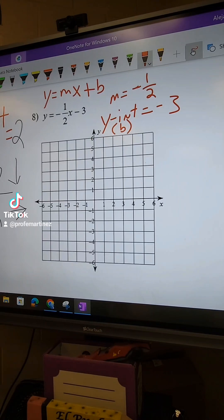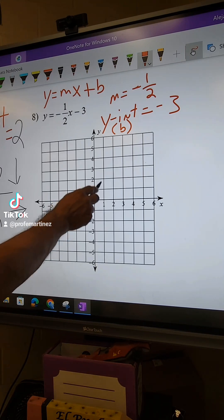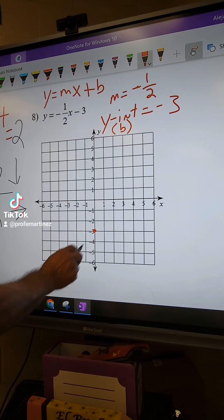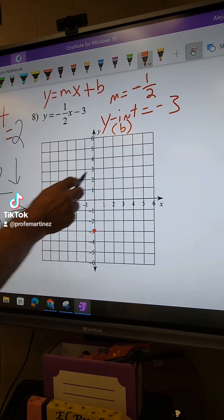Okay, so that's my two points that I need. You're going to start on negative 3, so start at negative 3. You got a point there, and from there you're going to use your rise over run.